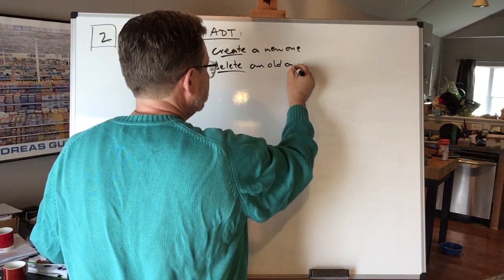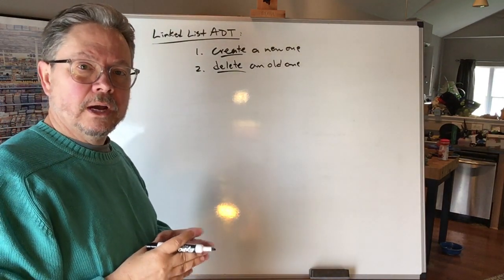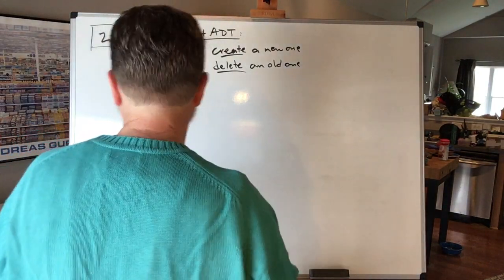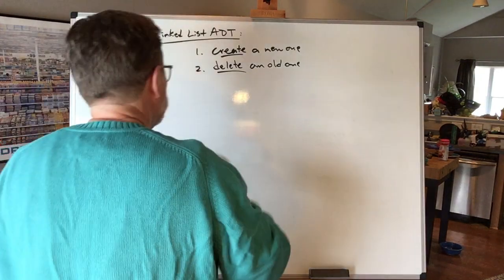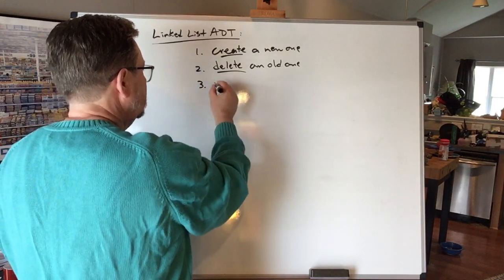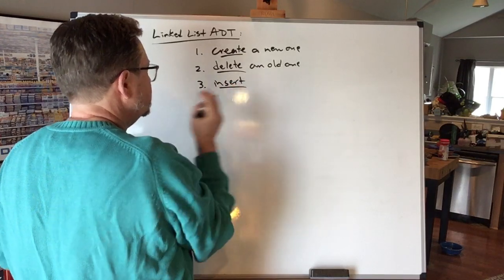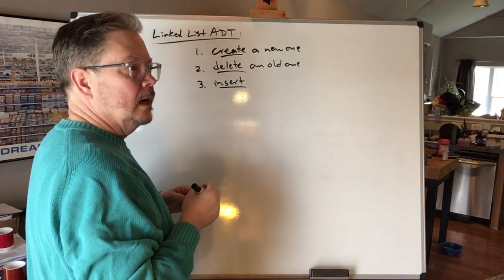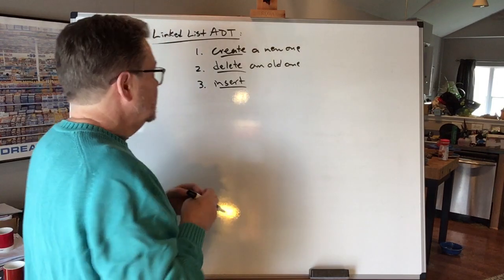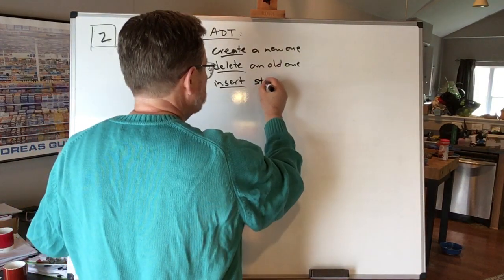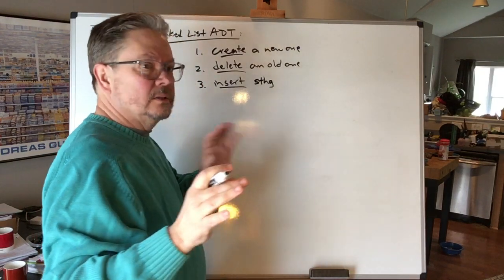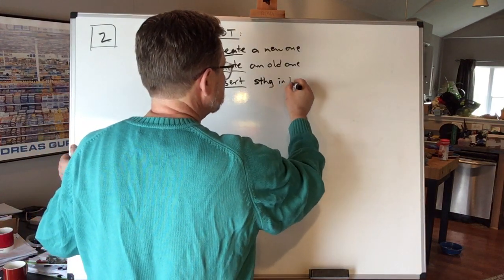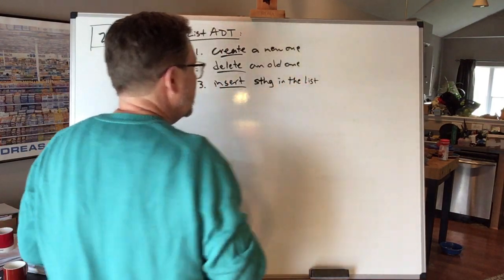Delete one we're not using anymore, because with dynamic memory allocation there will definitely be a mess to clean up — otherwise we'll get one of those dreaded memory leaks. Once we have a list, it would be nice to be able to put something in it: insert something. The something is irrelevant to being a linked list; we don't know and don't care what it is.